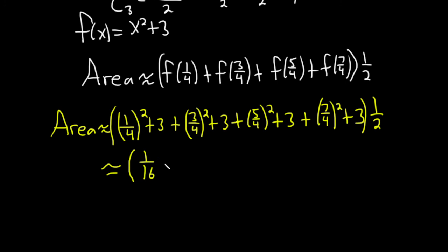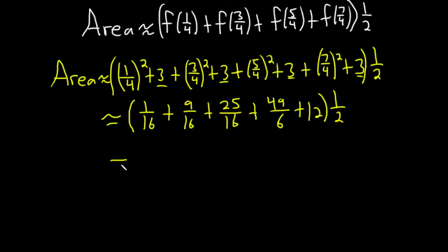This is one sixteenths plus nine sixteenths plus 25 sixteenths, ignoring the threes for now, plus 49 sixteenths. And we have one, two, three, four. So that's going to be 12. Three times four is 12. And we have a one half. All right. Now we have to do some addition here. So we have one plus nine plus 25 plus 49. That's going to be 84 sixteenths plus 12 times one half. Okay. This is where I feel defeated.